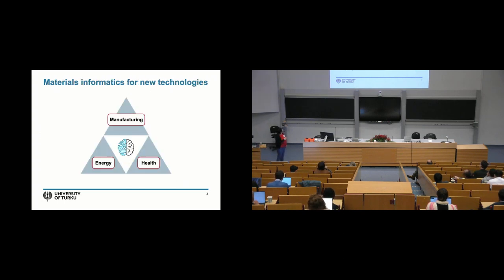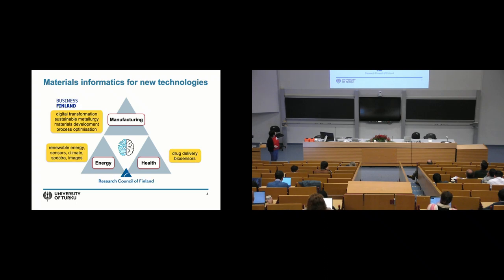Nowadays I run the materials informatics laboratory and in our group we develop materials for these three different areas. In energy we're mostly working on renewable energy applications so organic solar cells or perovskite solar cells, lots of rational sensor development. We're doing atmospheric chemistry studying the surface structures of aerosols and we've done a lot of spectra work and work with images. On the health side, again biosensors and drug delivery systems are very important. These are all organic-inorganic systems. And now we're increasingly involved in manufacturing sustainable metallurgy and helping our colleagues optimize their materials and processes.